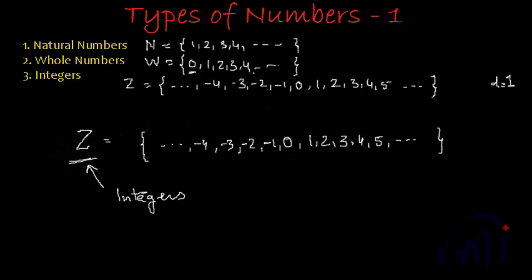So this was all about natural numbers, whole numbers and integers. You can perform any operation on these sets of numbers — we are just trying to classify them. You can perform addition, subtraction, multiplication, division — anything on all these sets of numbers. In the next video we are going to talk about rational numbers and irrational numbers. Bye-bye till then.